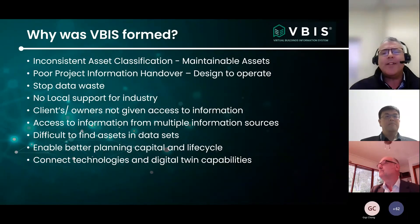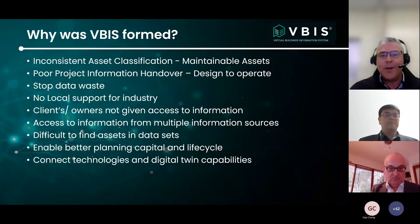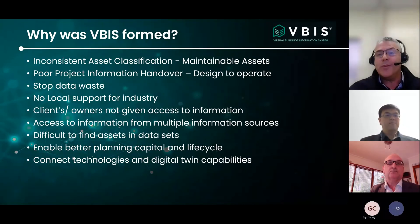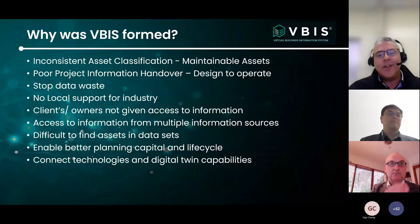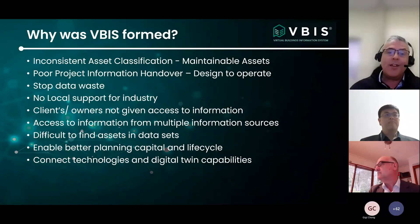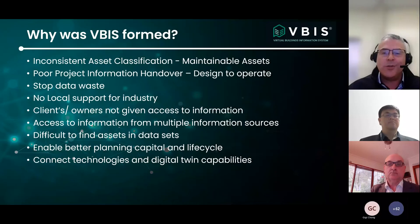One key component is that clients and owners don't always have access to their information — they have people that work on their behalf. We really feel that this classification would be able to provide owners information from multiple information sources. As you have fragmented data sets, you can use the VBIS string of information to find and retrieve those assets in hard-to-find places. This will enable better planning, capital and lifecycle analysis, and it's really there to connect technologies and potential digital twin capabilities.